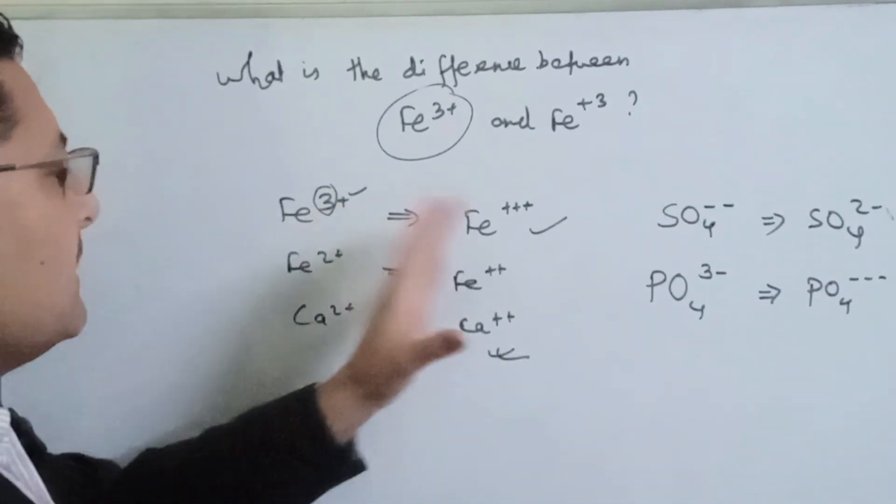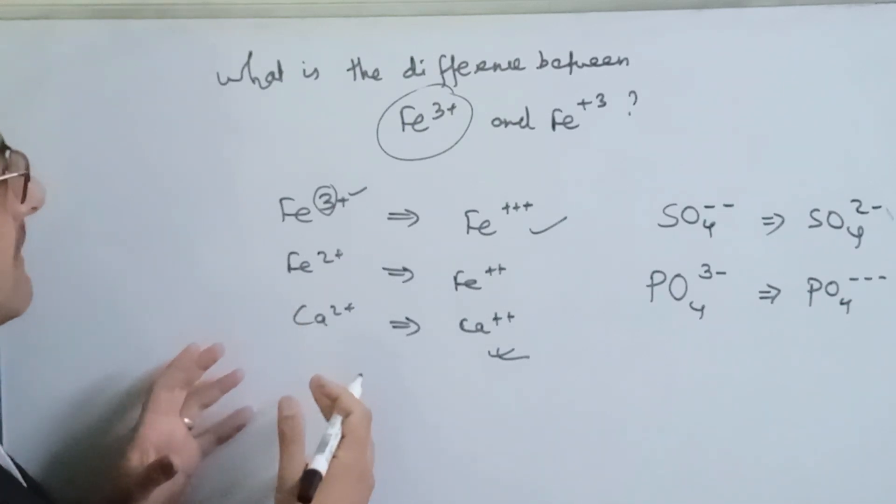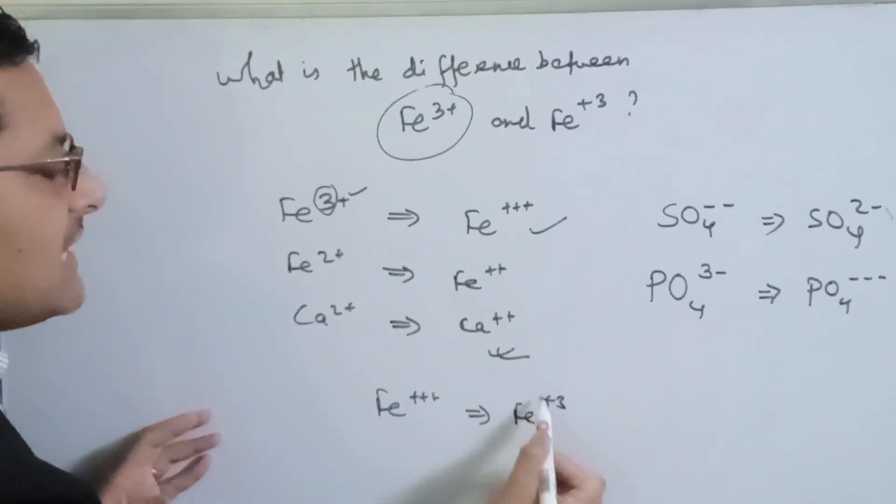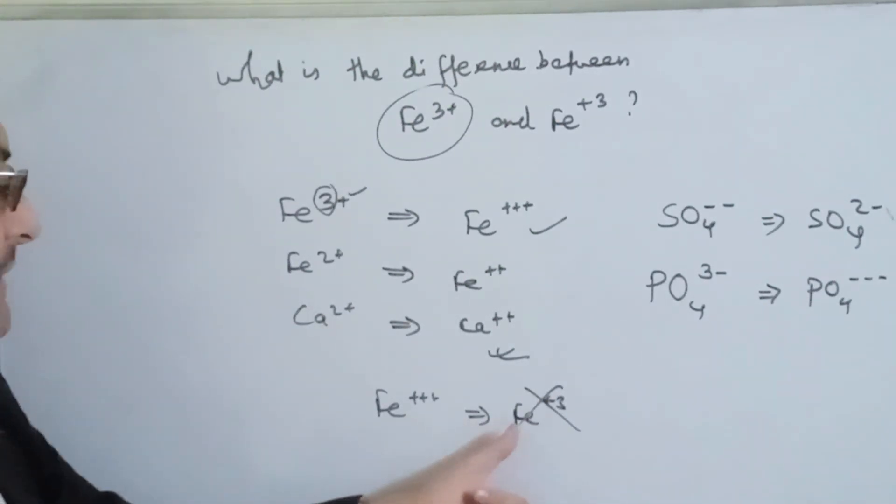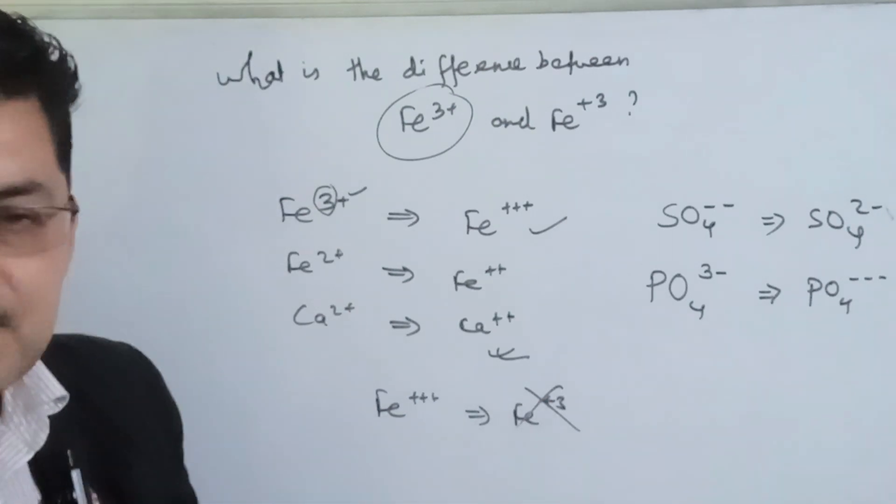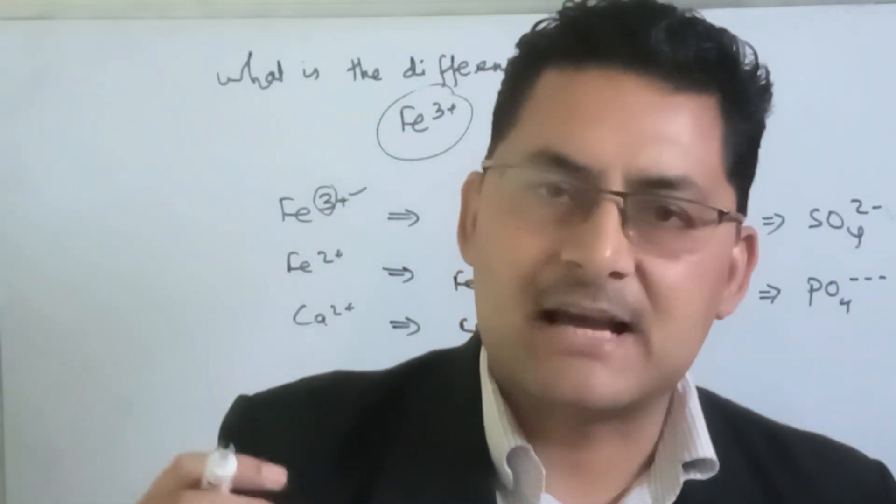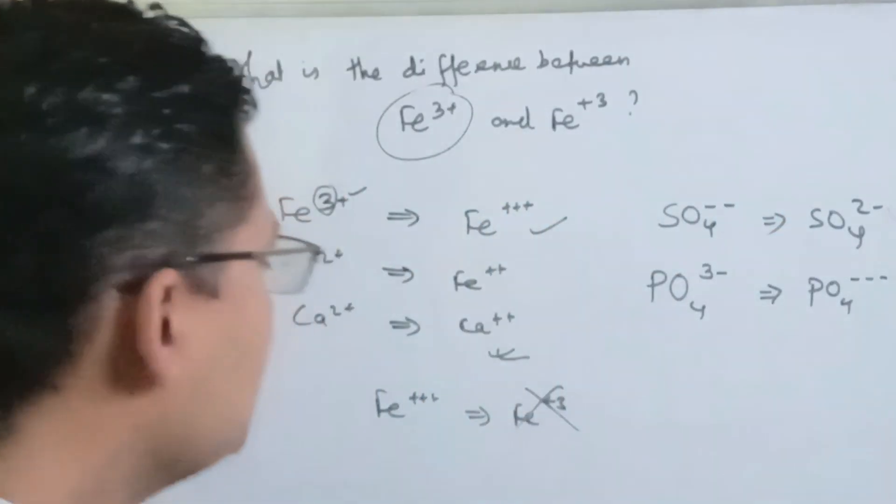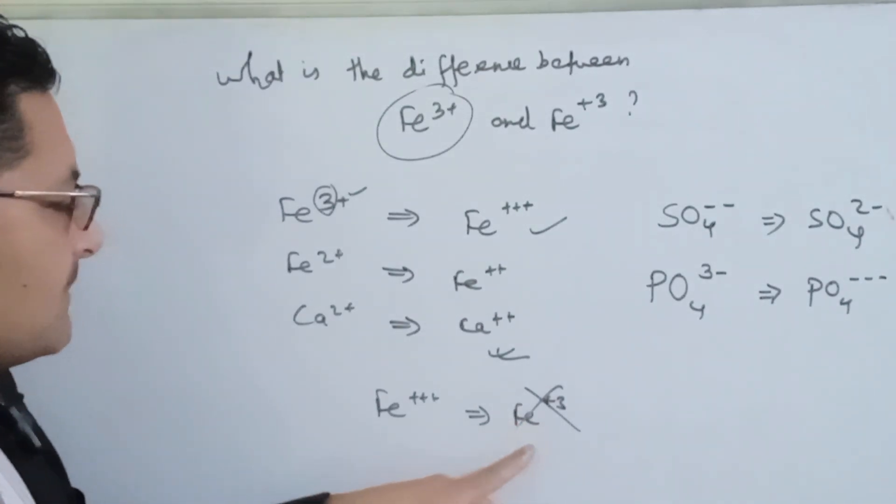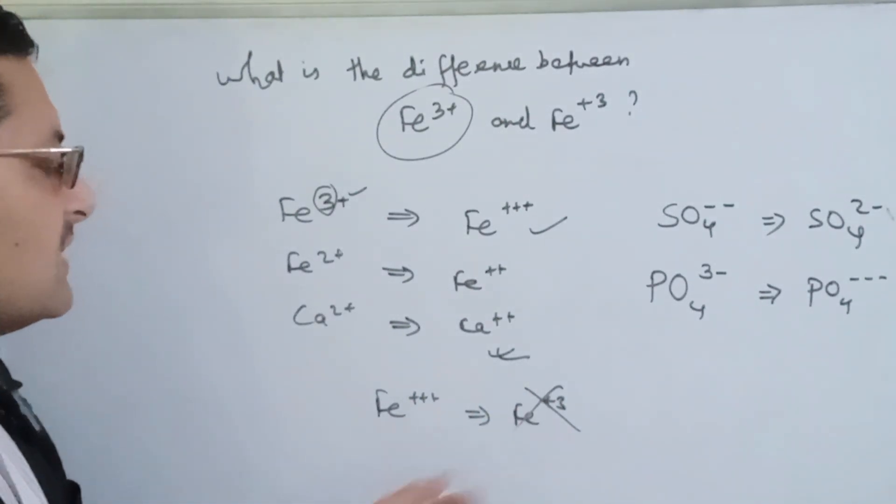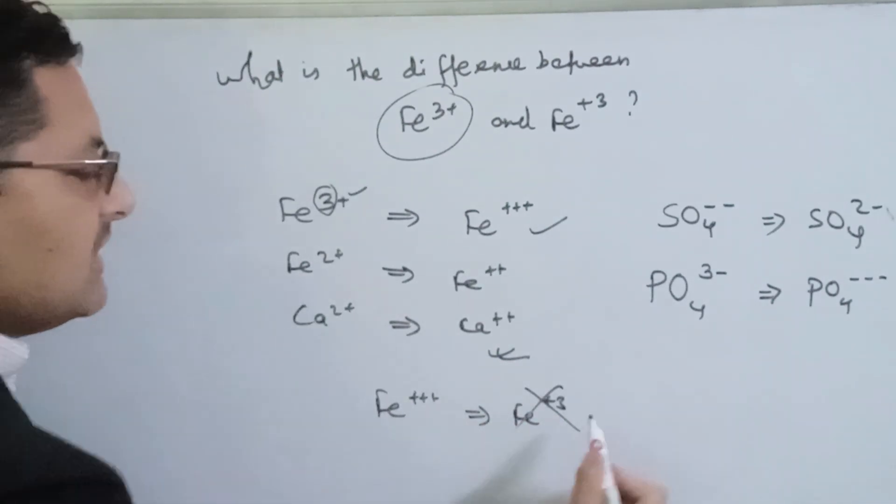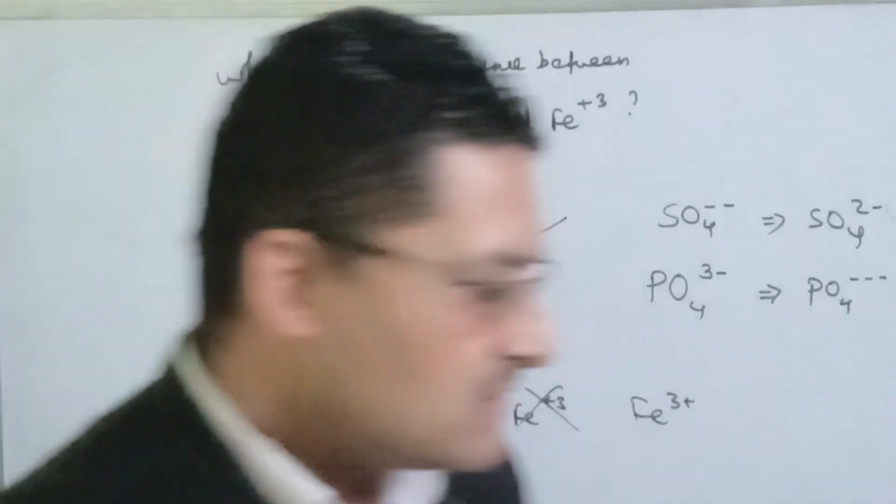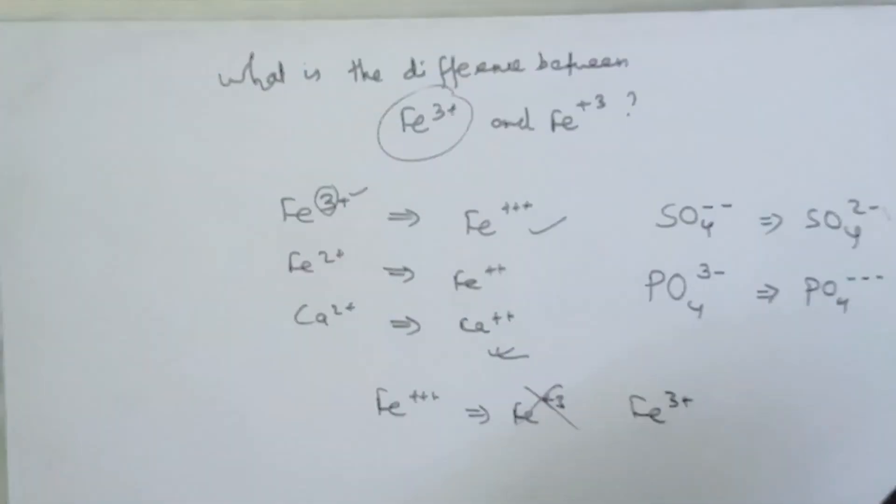The problem is that we have to understand the difference. It could be confusing whether it's the charge or the oxidation number. We have to find the sign and number for charge, versus the oxidation number. In the atomic state, we should write Fe³⁺. However, we can also use Fe³⁺ when we have a compound.